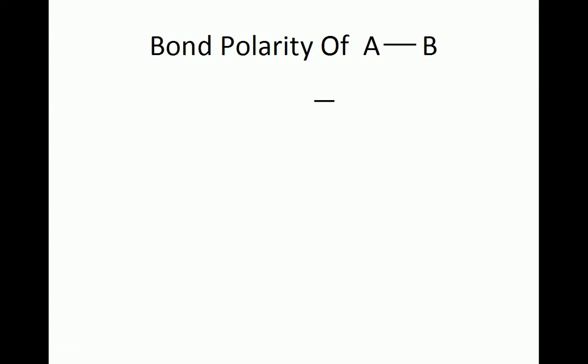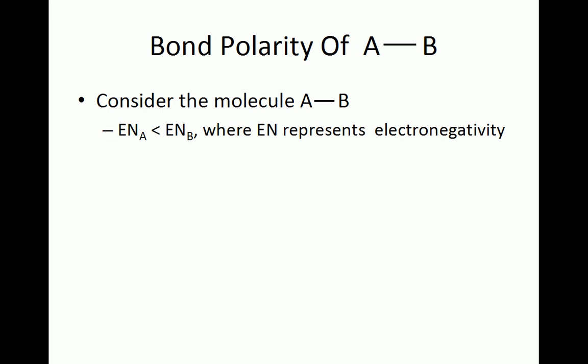Let us consider the generic diatomic molecule AB, where atom A is less electronegative than atom B. Bond polarity manifests as a result of the differences in electronegativity of a bond's constituent elements. The larger the difference in electronegativity between the two atoms in a bond, the more polar a bond is.